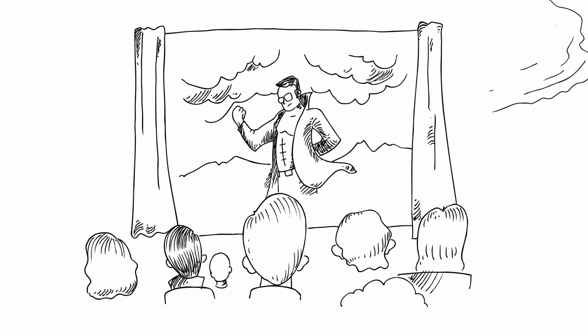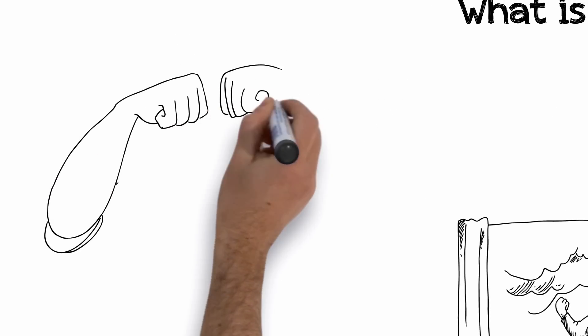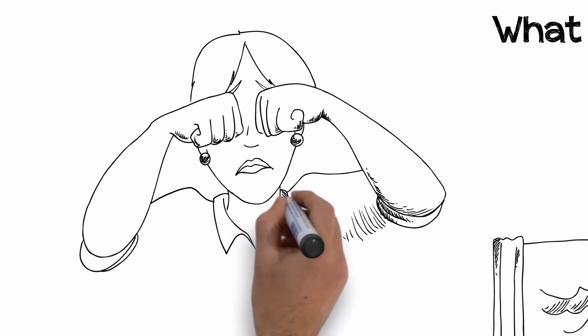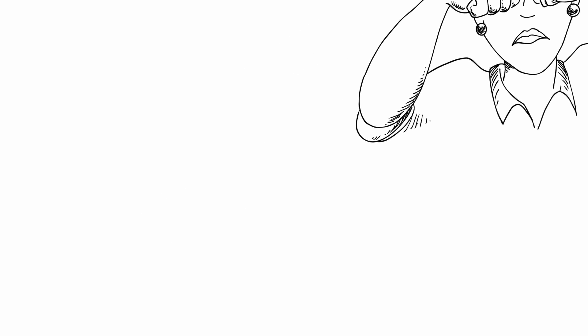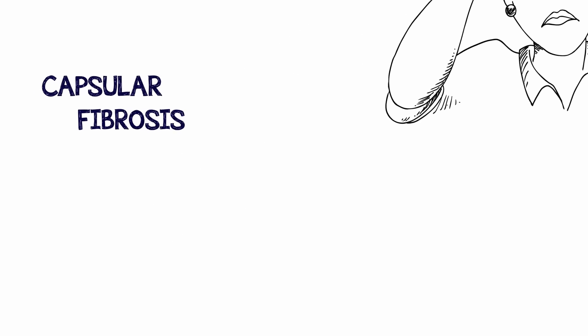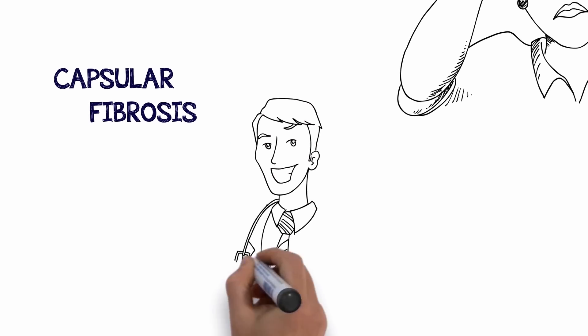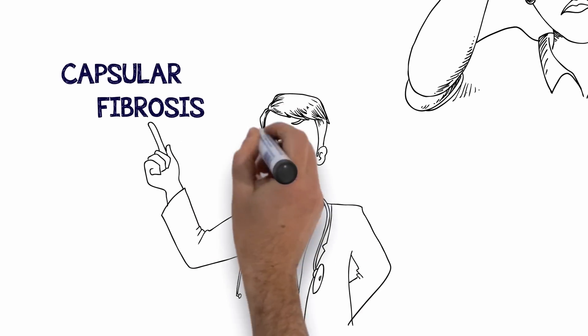No, no, not that kind of film. A hazy or foggy film that's making your vision less clear than it was after your surgery. Chances are that you've developed capsular fibrosis. This is a big medical word for a problem that's very common after cataract surgery.